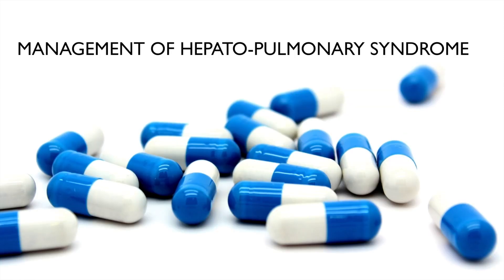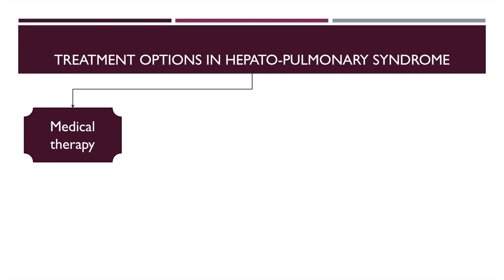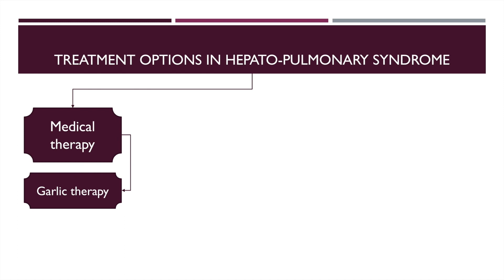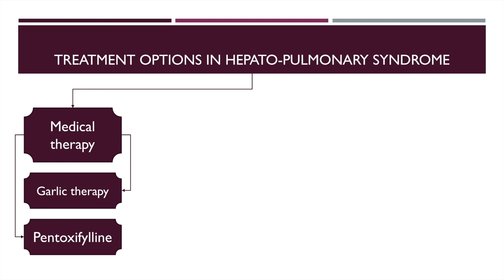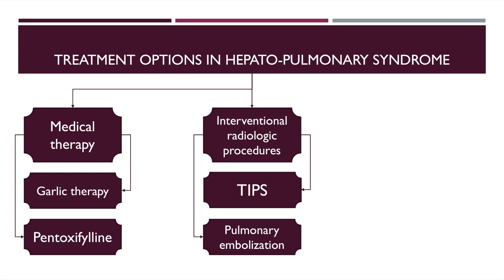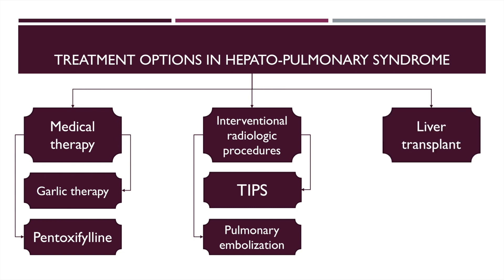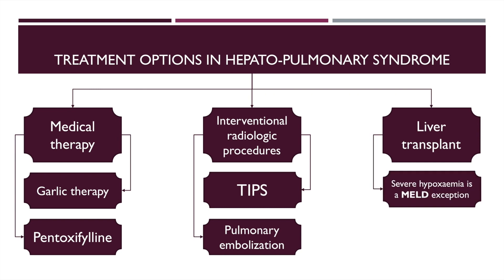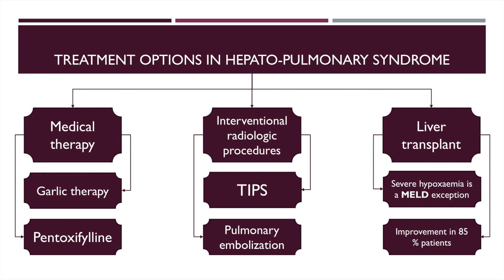Management options in hepatopulmonary syndrome include medical therapy. There are anecdotal reports that garlic can improve symptoms, though it cannot be formally recommended. Pentoxifylline has some role in the treatment of HPS. Interventional radiology procedures such as TIPS and pulmonary embolization also have a role. The definitive treatment is liver transplant — patients with severe hypoxemia get priority, 85% of patients will improve after transplant, though improvement in symptoms may take up to one year.